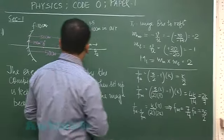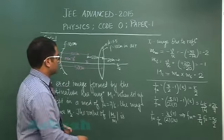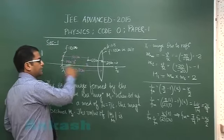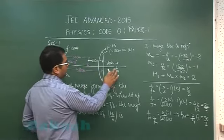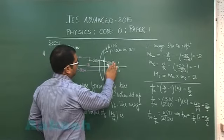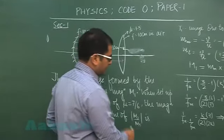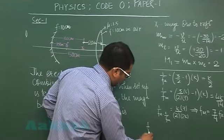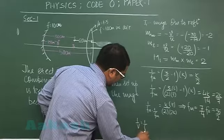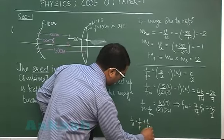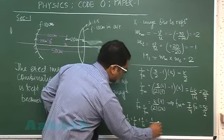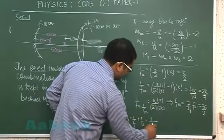Let's calculate the final image position. The mirror part is not going to change but the lens part will certainly change. 1/V = 1/F + 1/U. The focal length in medium is 35/2, so that will be 2/35, and U is 20, so -1/20.